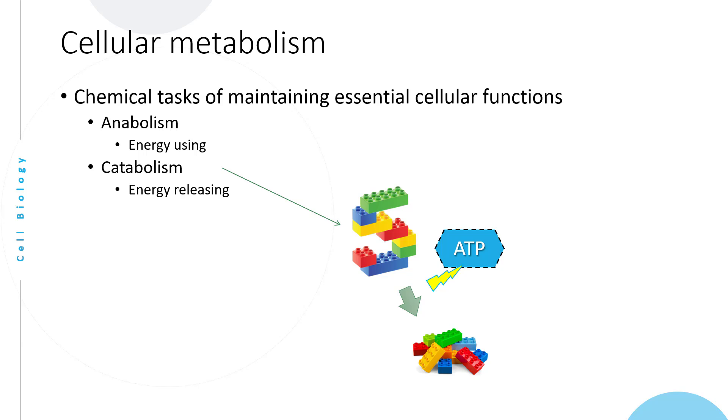This ATP can then be used to help anabolic reactions. Anabolic reactions are the opposite of catabolism. Basically, you take Lego bricks and construct complex structures with them. So this is one use of ATP: anabolic reactions.